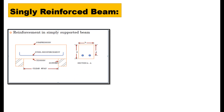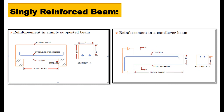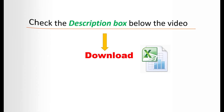These are some examples. It is a simply supported beam where the reinforcement is provided on only one side, that is the tension side, and this is the example of a cantilever beam. Before watching this video, please check the description box below the video to download the design spreadsheet for the singly reinforced beam.